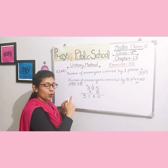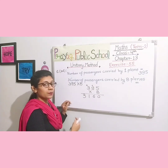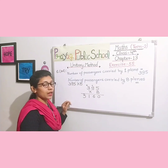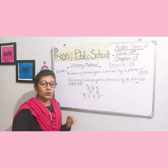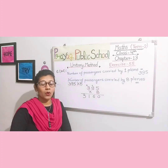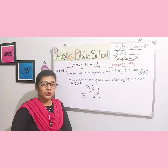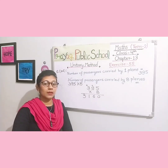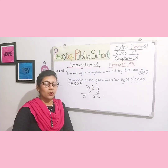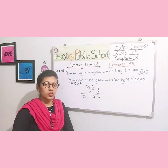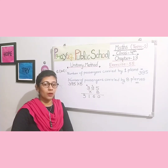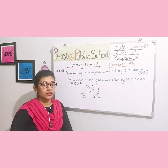You must solve both steps properly to get the final answer. If you skip one step, your answer will be incomplete. Do the given sums in your homework copy very carefully. Also do the given classwork notes in your classwork copy. First mention the term 2 syllabus, then on the next fresh page write the chapter name, chapter number, and date. Write with neat and clean handwriting. Thank you.